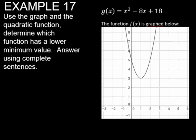For example 17, it wants us to use the graph of the quadratic function and determine which function has a lower minimum value. So I see this one is in standard form, and f of x is graphed.